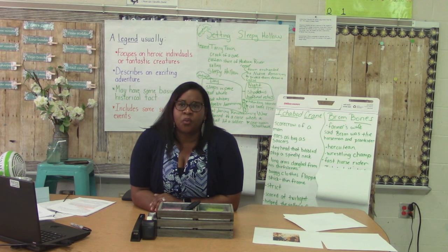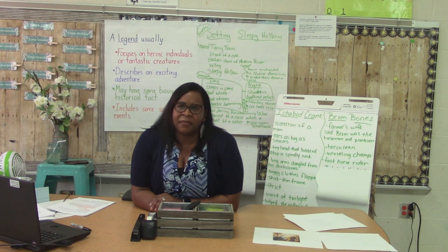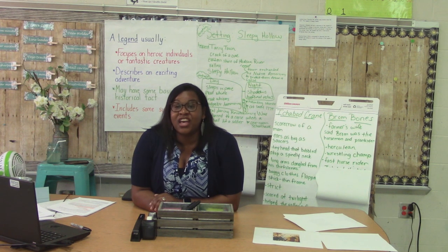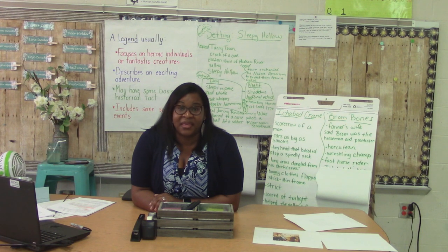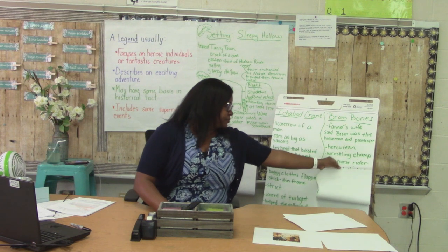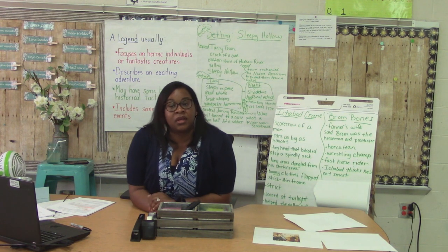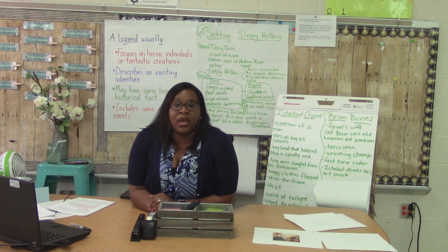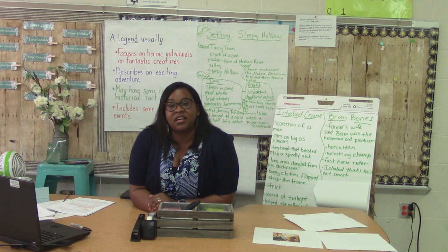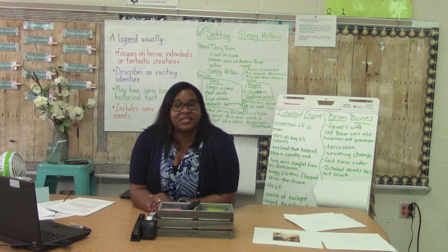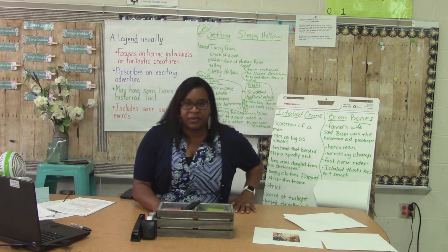I noticed the author uses what Ichabod thinks of Brum to give us details about Brum. Brains no bigger than the peas they planted — if you know how small a pea is, it's tiny. Ichabod thinks Brum has a tiny brain, so I can infer that Ichabod probably thinks Brum is not very smart. Let's add that to our chart. One last sentence tells us two things that are important about Brum. That boy loves only two things, said the good wife — his heart's daredevil and young Katrina Van Tassel. Add that to your chart — he loves his heart's daredevil and loves young Katrina Van Tassel.